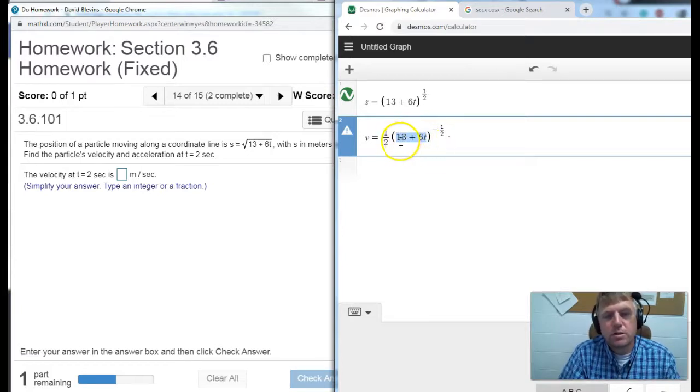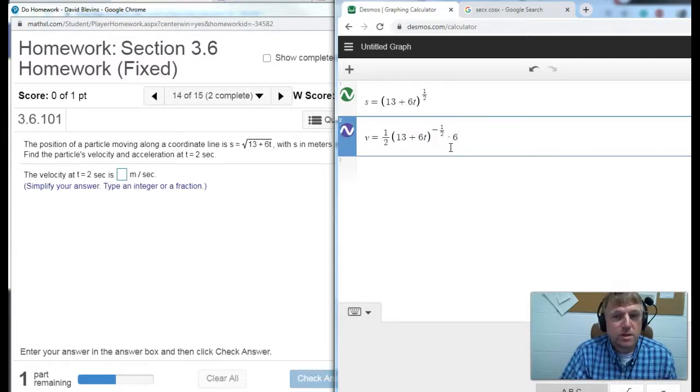But you can also do it piece by piece. This is a constant. The derivative of a constant is 0. Plus this is a number times t to the first. So the power rule says 1 times 6. T to the 1 minus 1 is 0. T to the 0 is 1. So this is just going to be 6. So that's what velocity looks like.